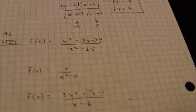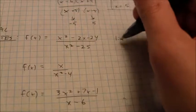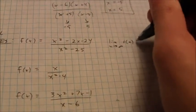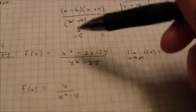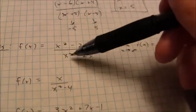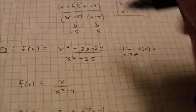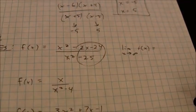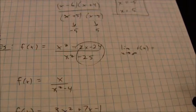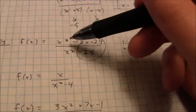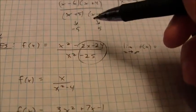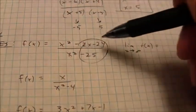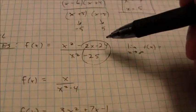Horizontal asymptotes are the limit as x approaches infinity of f(x). Looking at this first one, the highest power is 2, so the other powers become relatively insignificant as x increases. You only care about the two highest powers. x squared over x squared simplifies to 1, so the horizontal asymptote is the horizontal line y equals 1.